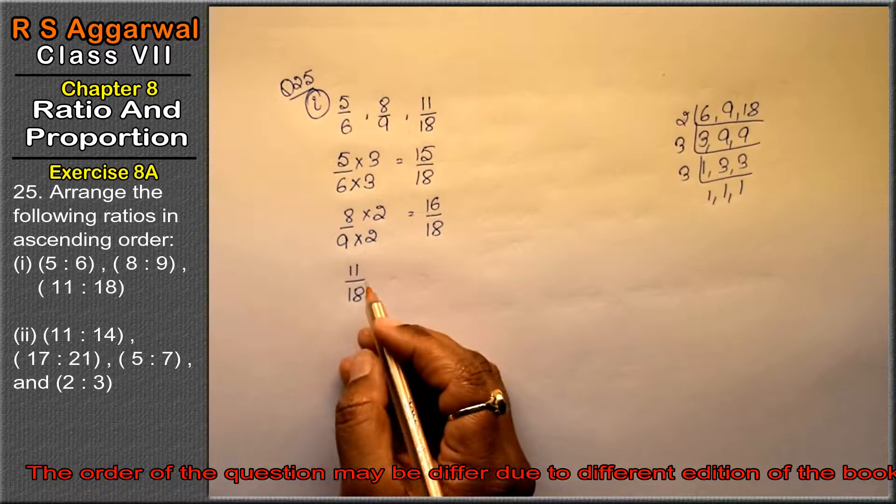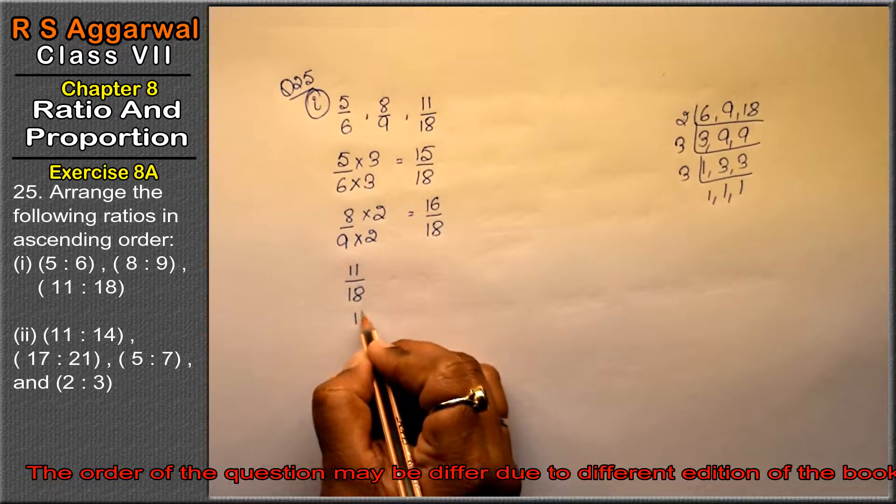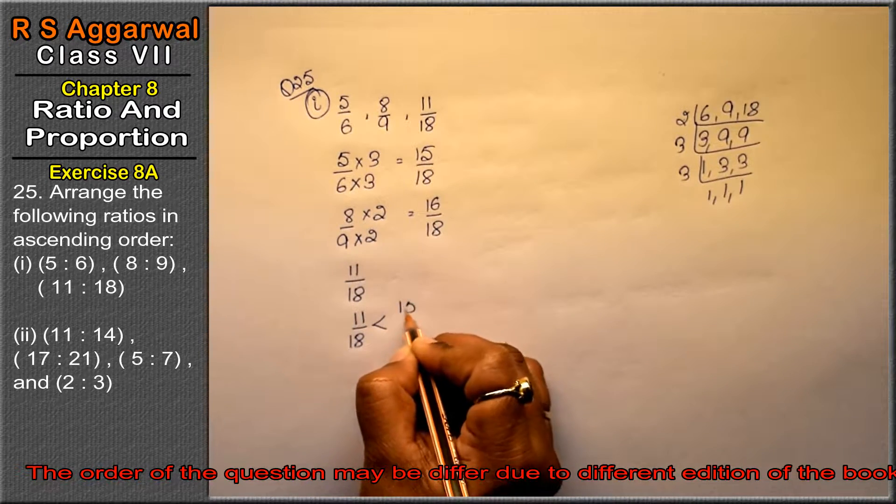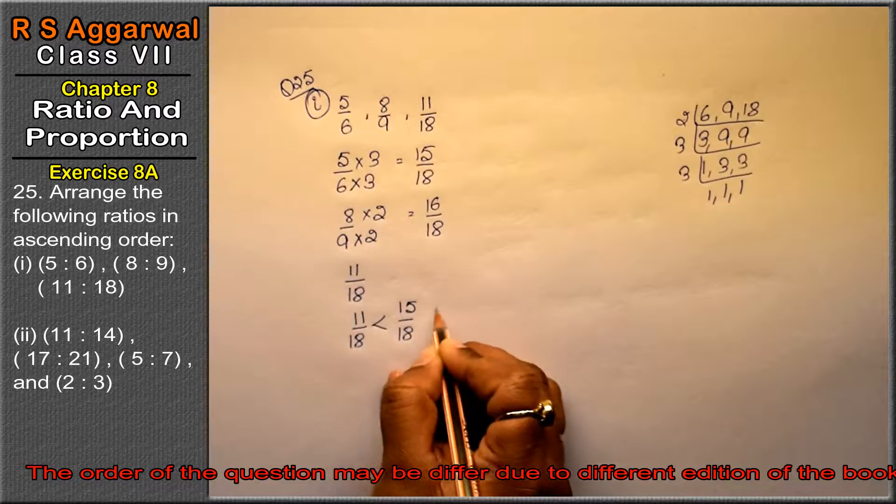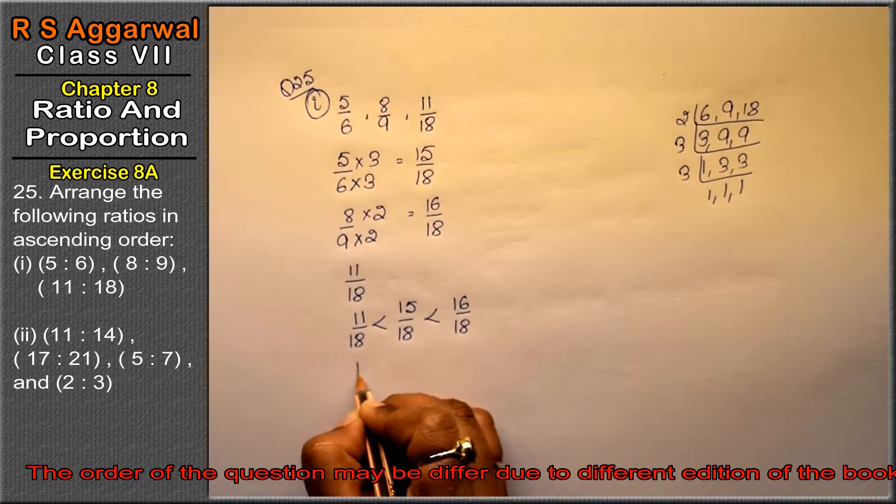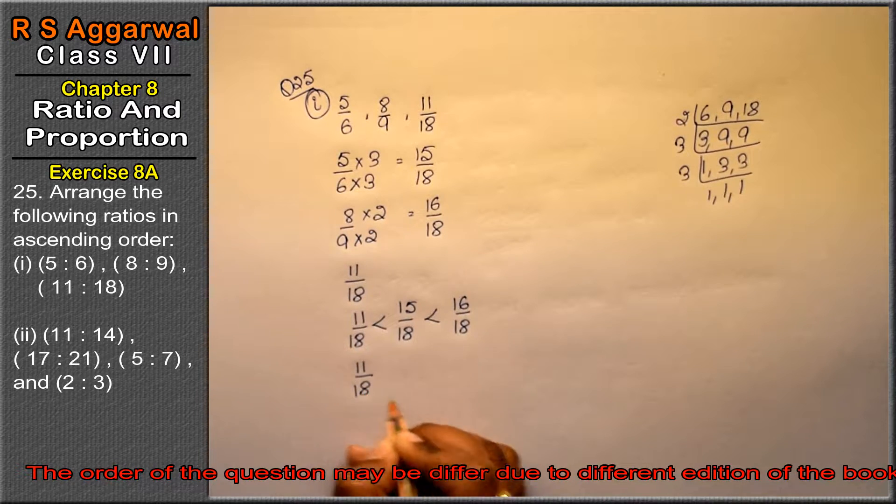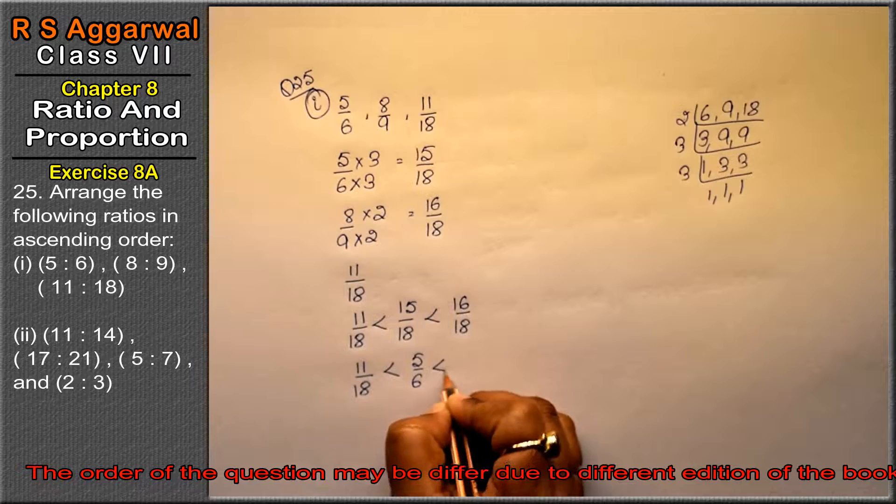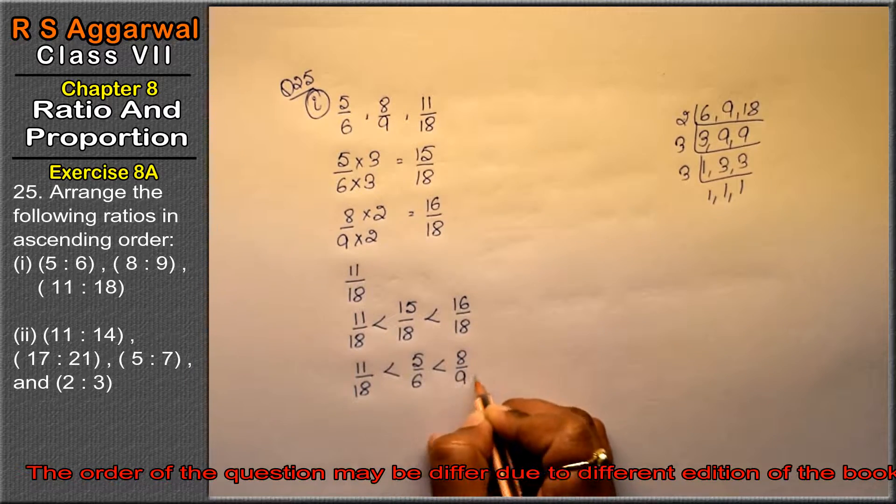Which is the smallest in ascending order? 11 upon 18. Then 15 upon 18, and 16 upon 18. Now we write the original values: 11 upon 18 is the answer. Next is 5 upon 6, and next is 8 upon 9.